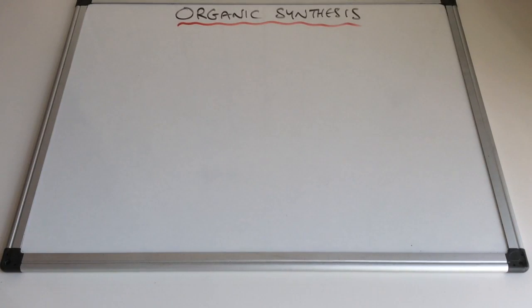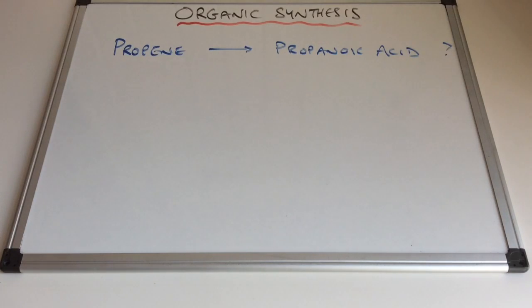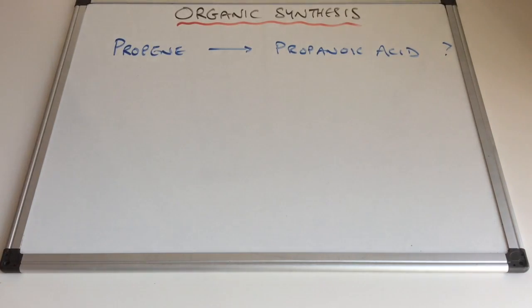In this video I'm going to look at organic synthesis. The way we'll do it is I'll pose a question, then break it down into the functional groups involved and establish the route for the synthesis. We'll look at the reagents and conditions required along the way and write chemical equations for the steps.